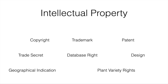A trade secret is some useful information that is kept secret. A database right is a property right in Europe in the contents of a database. A design right prevents people copying the non-technical elements of a product's design. A geographical indication is a special term that describes goods from a particular region, such as Parmesan cheese or champagne sparkling wine. And plant variety or plant breeders' rights give breeders the rights to stop people from growing plants they have bred without authorisation.